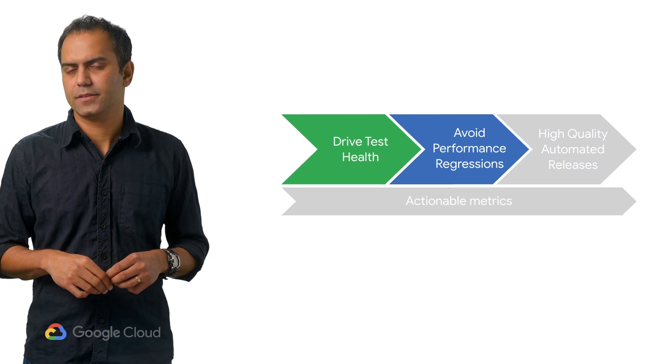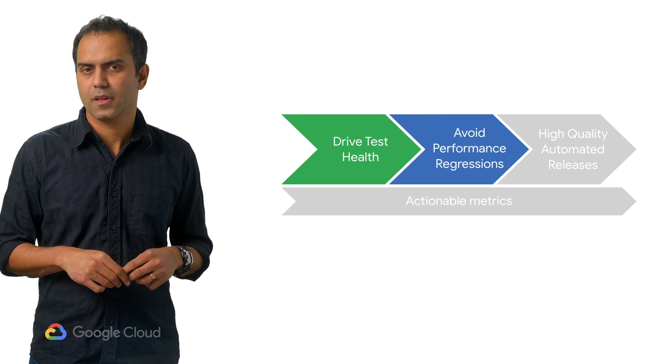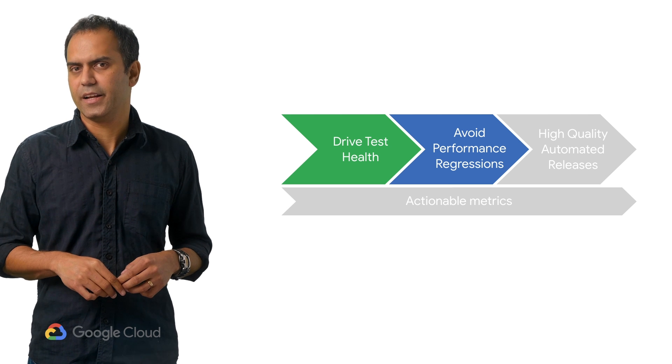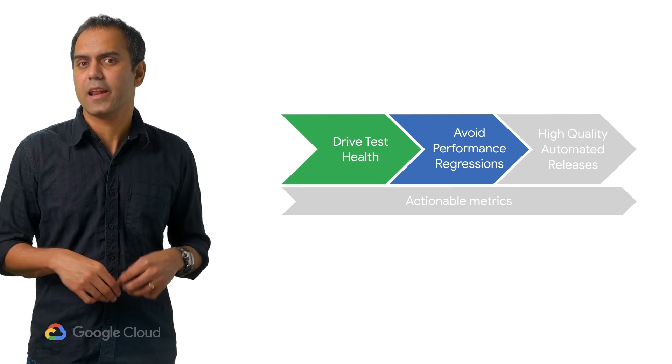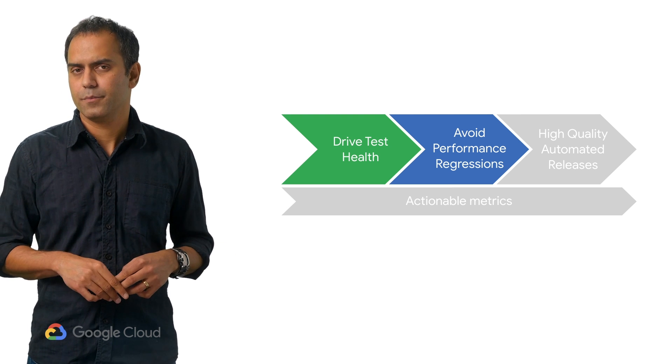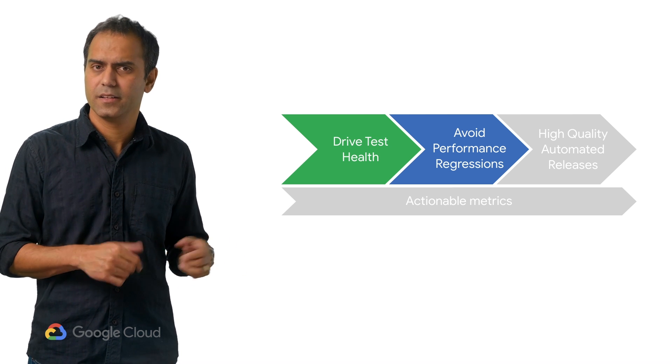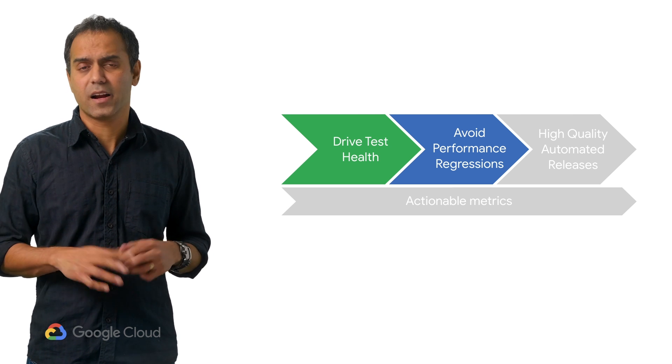Let's zoom in on two of these: driving test health and avoiding performance regressions. For driving test health, we aim for hermetic integration tests, fast pre-submits, and elimination of test flakiness. We have built a cloud integration testing framework internally that helps us write tests once and run them against any environment. We enable developers to catch performance issues early in the development process via a framework that enables developers to create sustainable performance automation that can gate releases on performance criteria. We aim to improve GCP's quality and deployment by reducing manual toil, increasing automation, eliminating cherry picks, and improving the fidelity of the test signal in our pre-production environments.